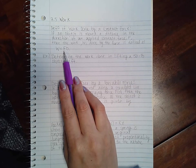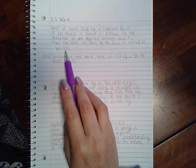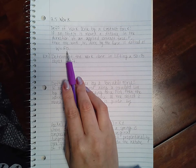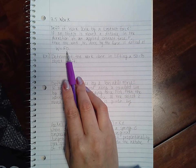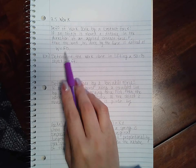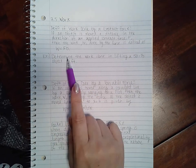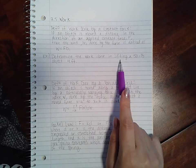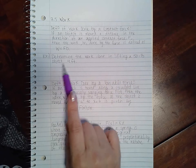F is the force with directional sign included, and D is the distance, which is always positive because length cannot be a negative value. Example 1 says: determine the work done in lifting a 50-pound object 4 feet.